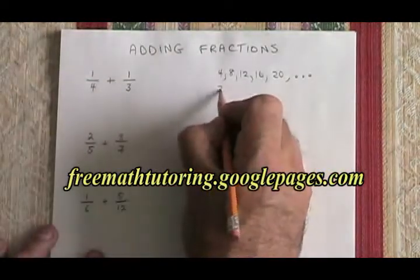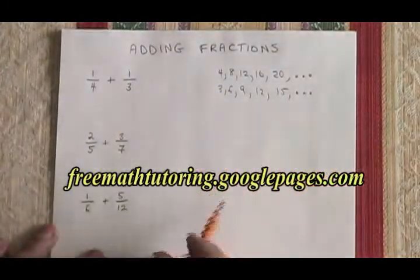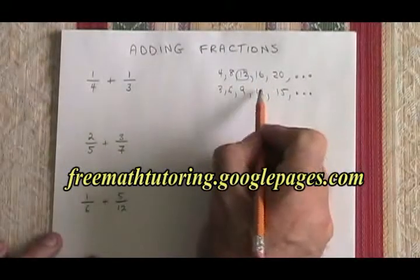3's multiples are 3, 6, 9, 12, 15, and it keeps going. I simply look for the lowest number that's on both lists, and the one I see is 12.